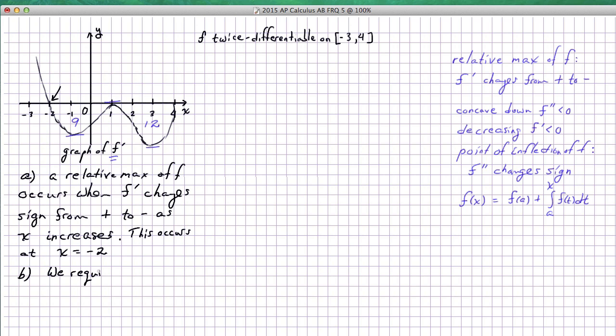Let's write that out because it asks for a reason. We require f prime less than 0 to satisfy the decreasing requirement. We also require f double prime less than 0 to satisfy the concave down requirement.